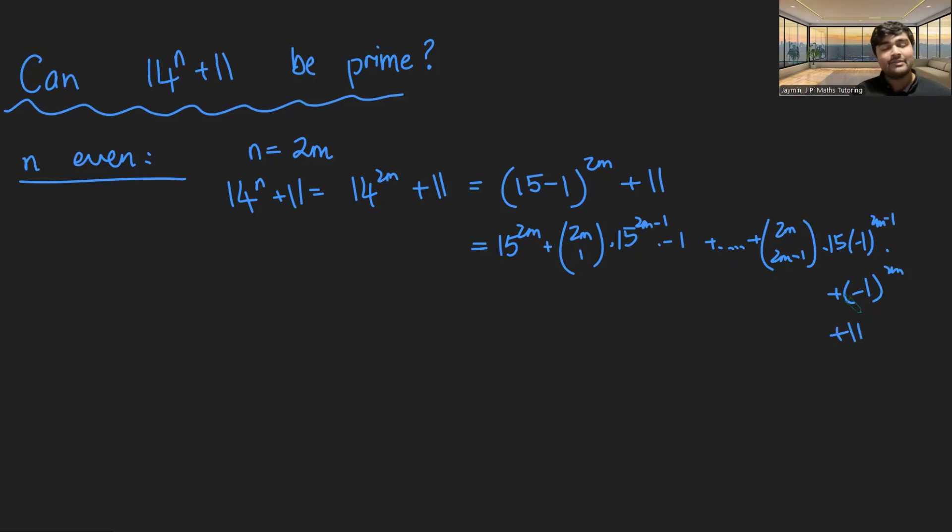And then of course, we've got this plus 11 here, like so. Now, minus 1 to the 2m, because 2m is clearly even, minus 1 to the 2m will be 1. So 1 plus 11 here, that's going to give us 12.